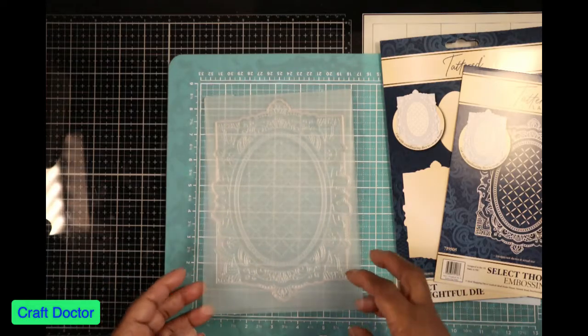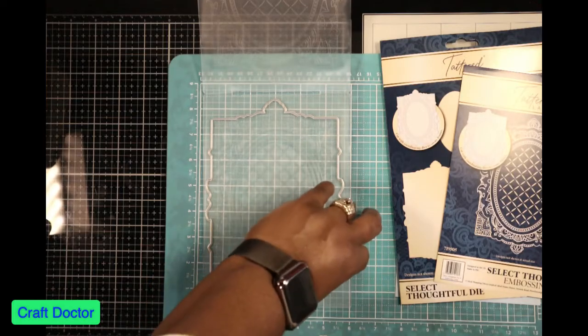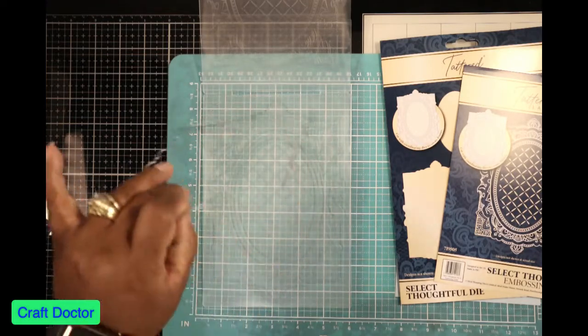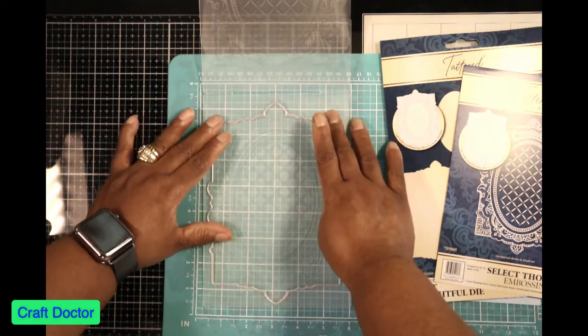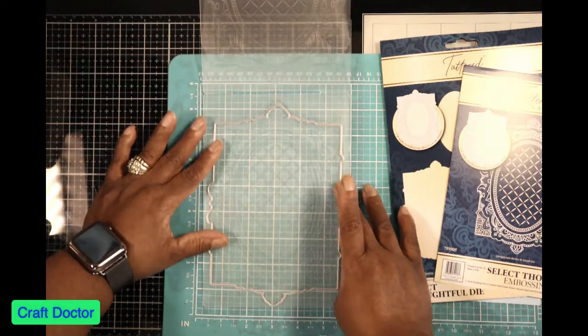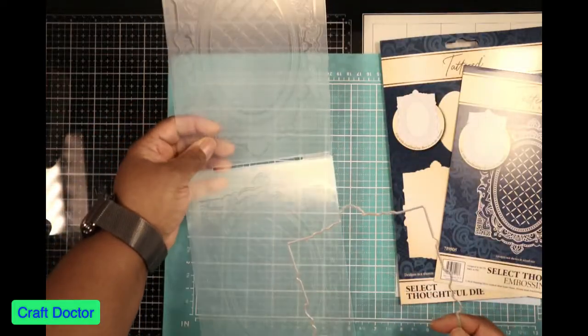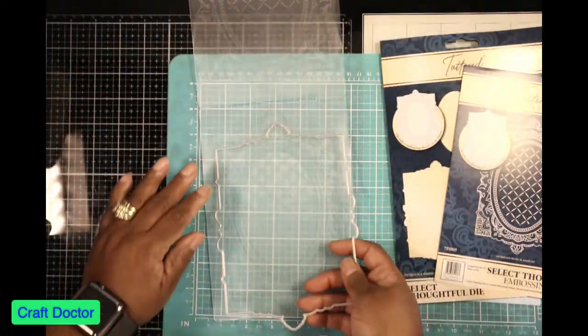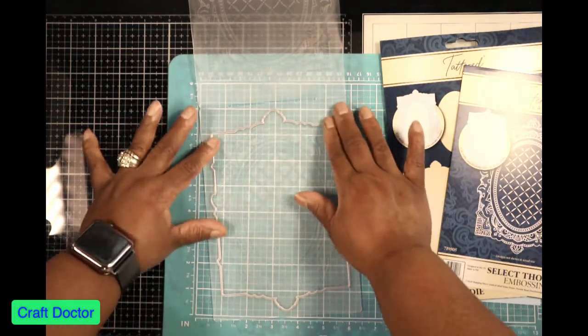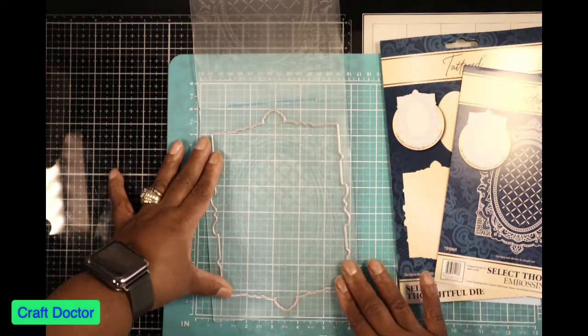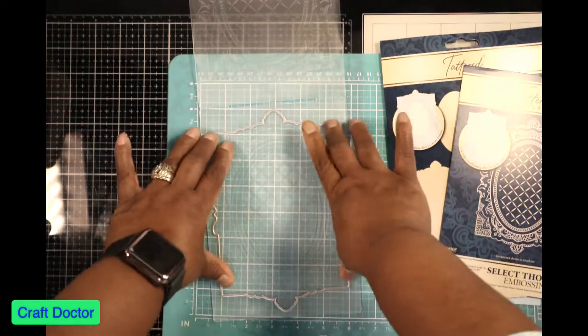But the difference is when you open up this embossing folder, you can drop in or select the die you want to cut. So I can put this in here, there's a groove that this die fits in, and see that? Once you put it in that groove, it'll only cut out or it'll cut out where you want it to.